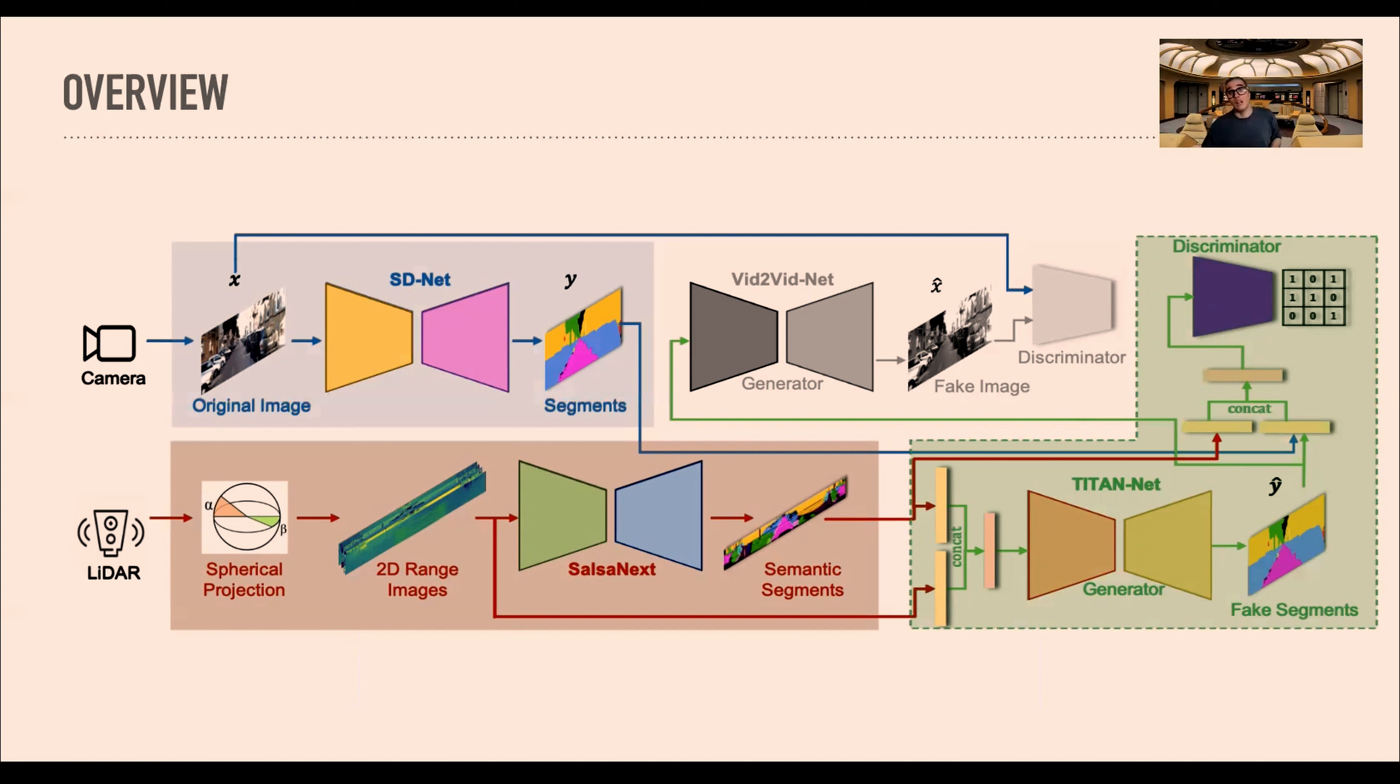Then, because we have this higher representation, we have the possibility to have another mapping to the real RGB scenario. We use Vid2VidNet, another GAN-like architecture that takes our fake segments and tries to generate real images. It's worth noting that our schematic is also conditional and works on a patch-based approach.